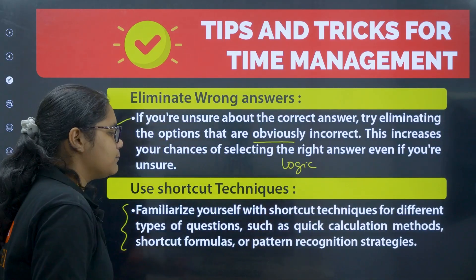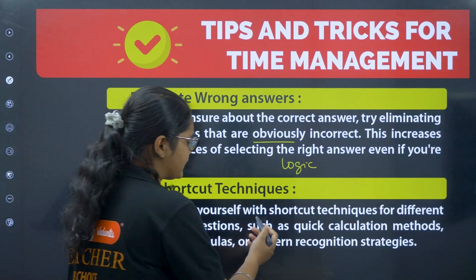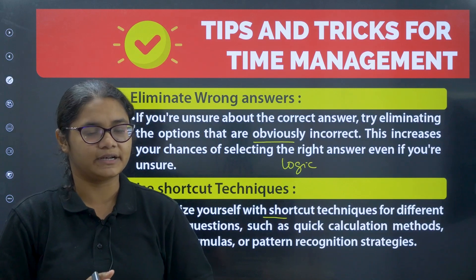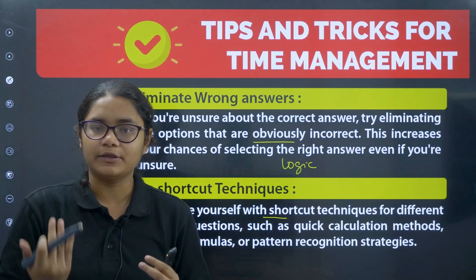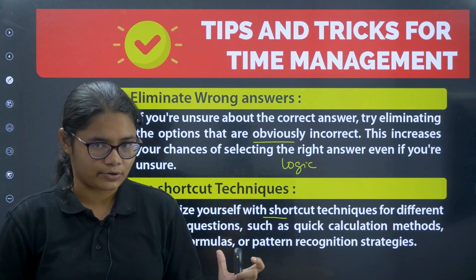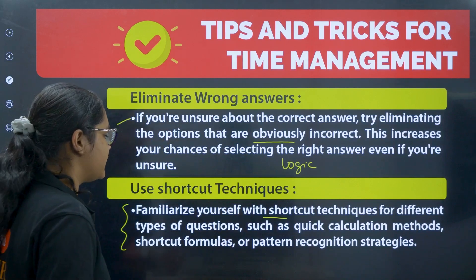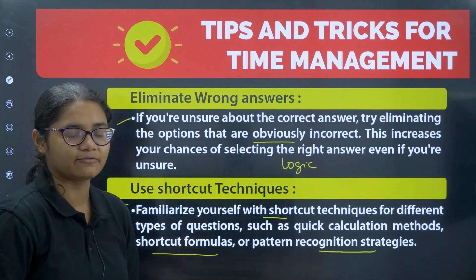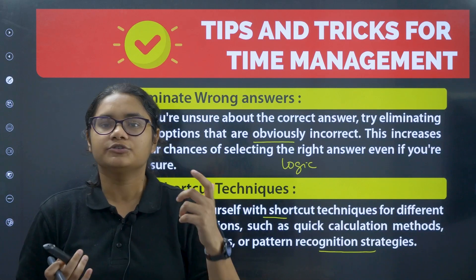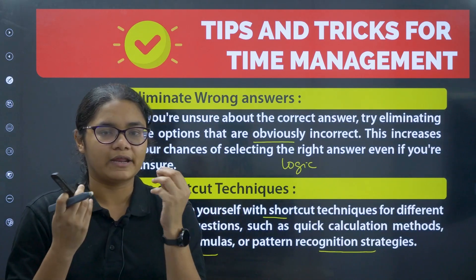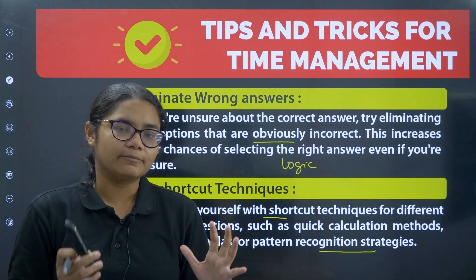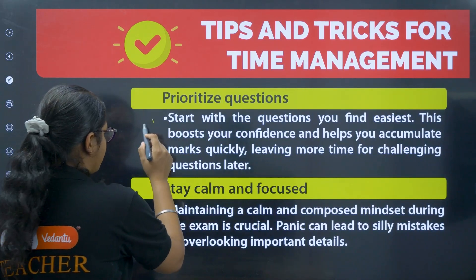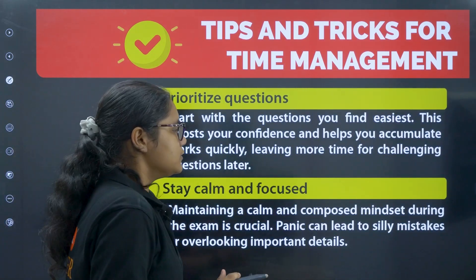Tip four: use shortcut techniques. For very easy multiplication or addition, don't reach for the calculator — do it mentally to save time. Also use pattern recognition and shortcut formulas. For example, in Chemistry we have shortcuts to find the solubility product or find bond order. Such shortcut methods can save a lot of time.